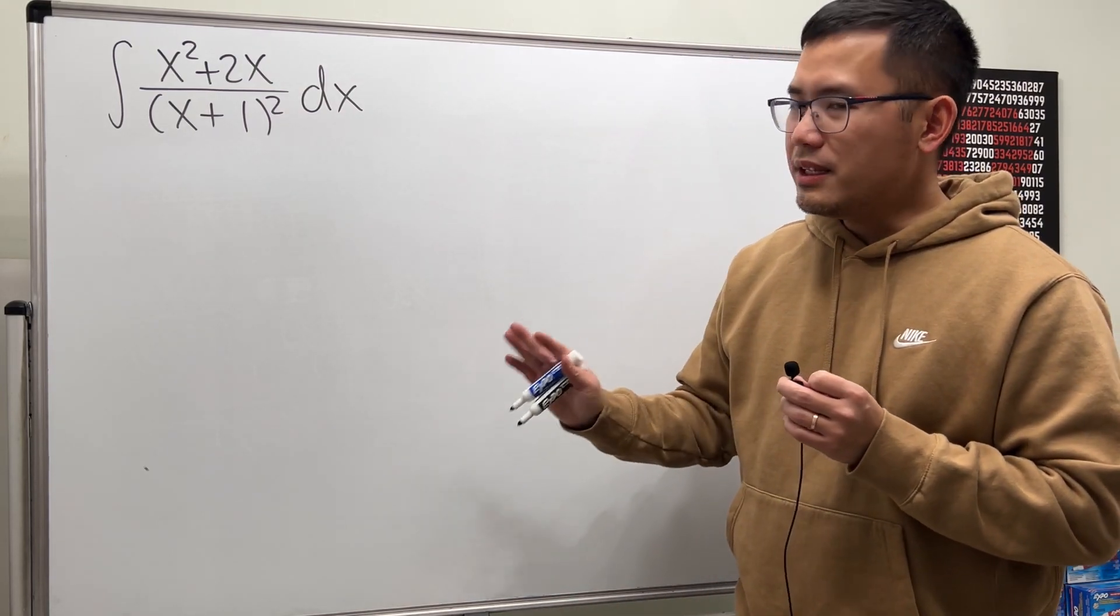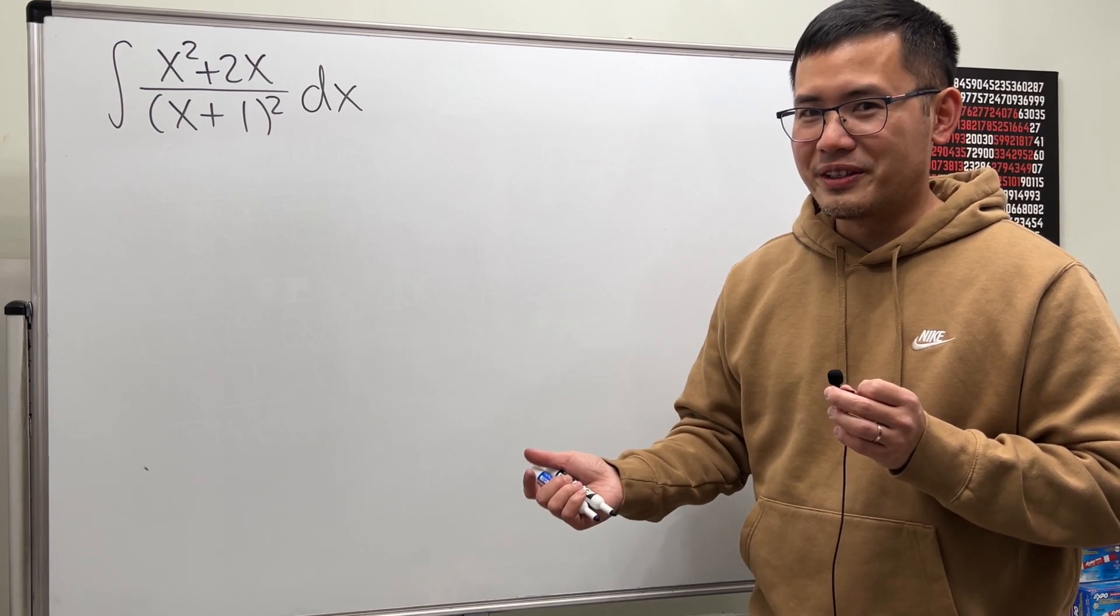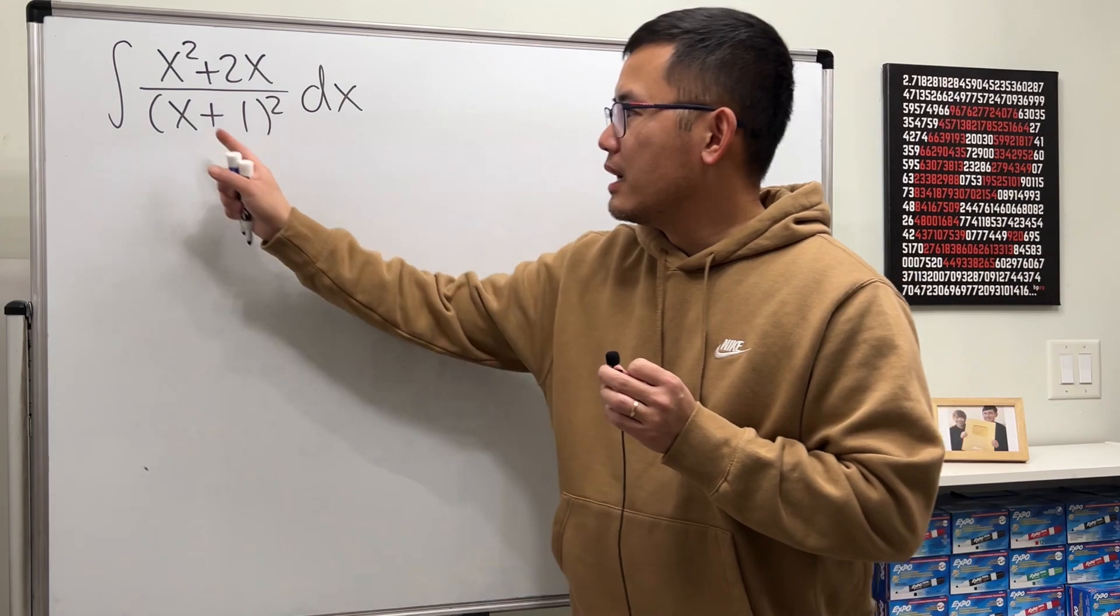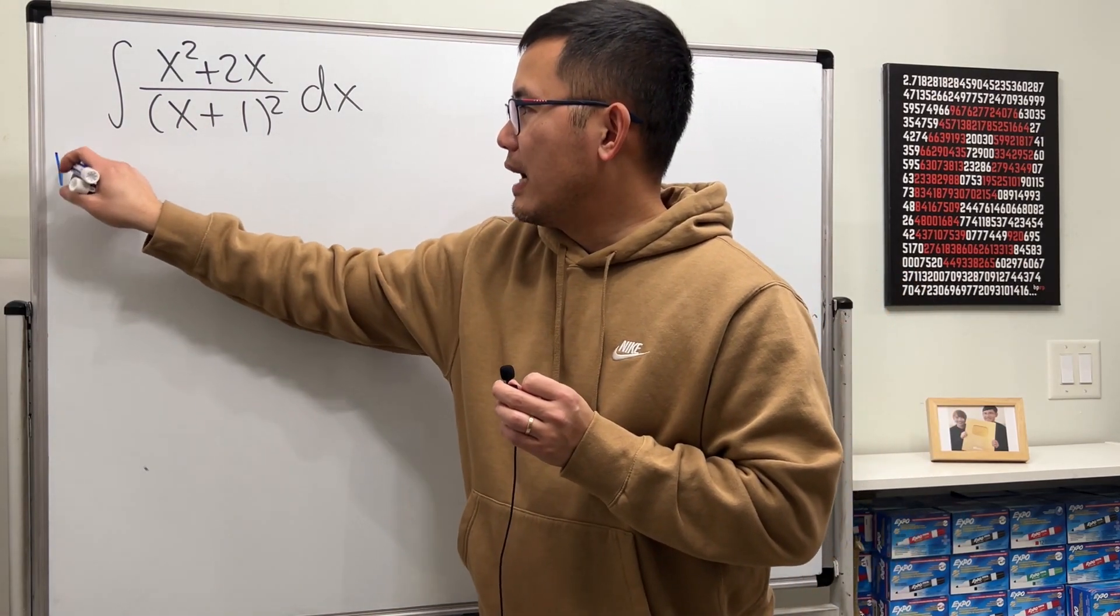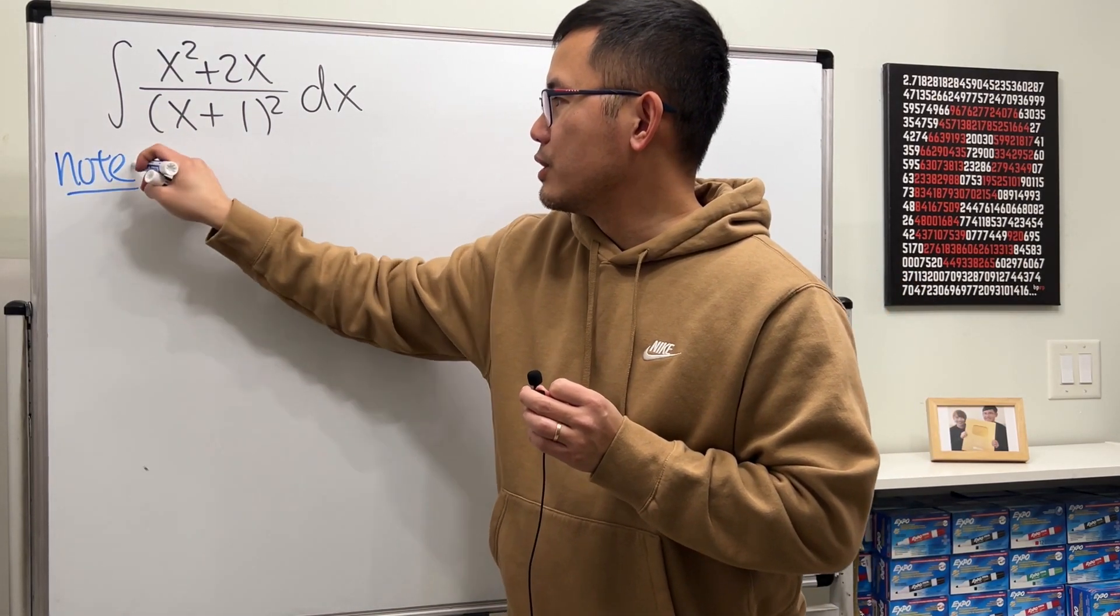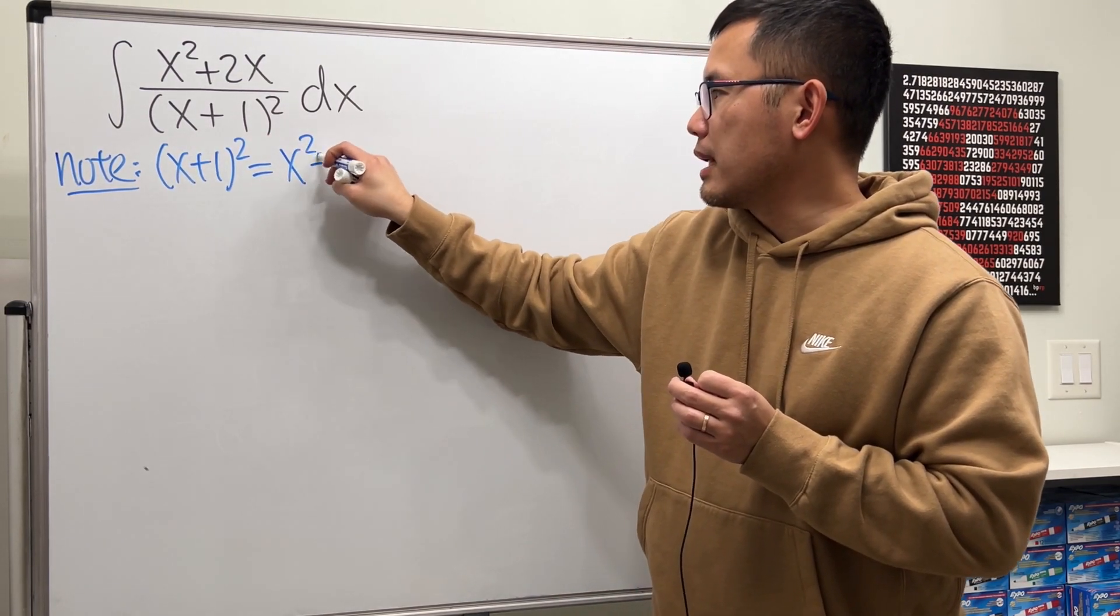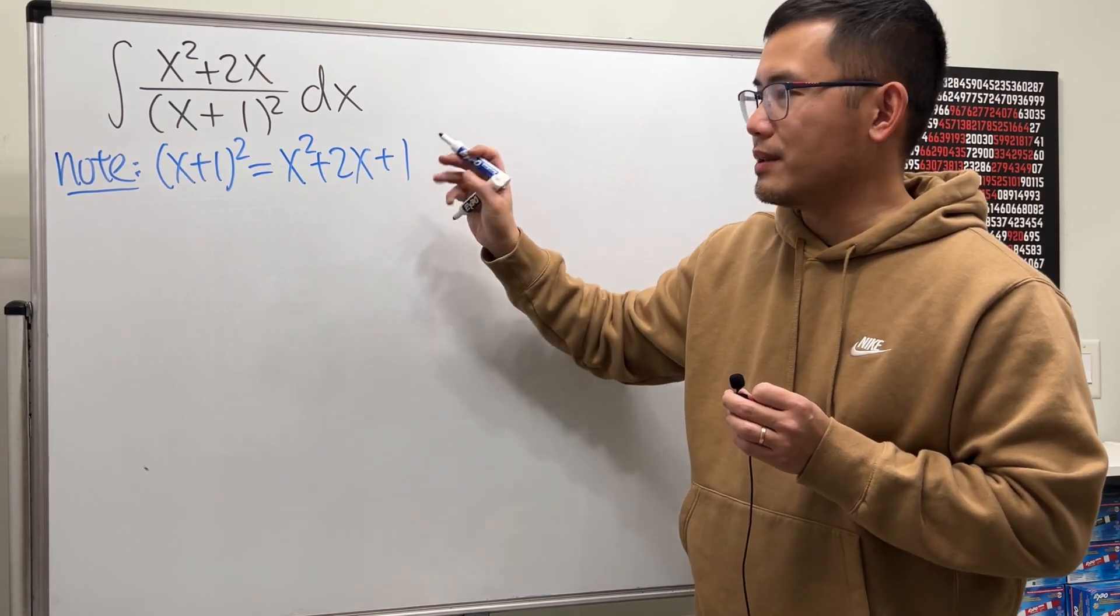But we are not going to do polynomial long division here because this is actually really nice. Have a look. The denominator, if I expand it, let me just write this down for you, x plus 1 squared equals x squared plus 2x plus 1.